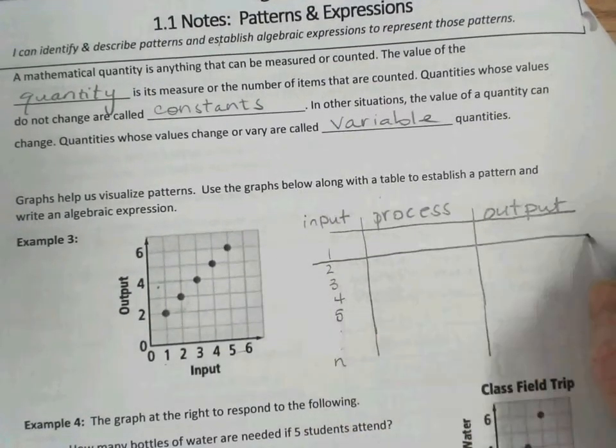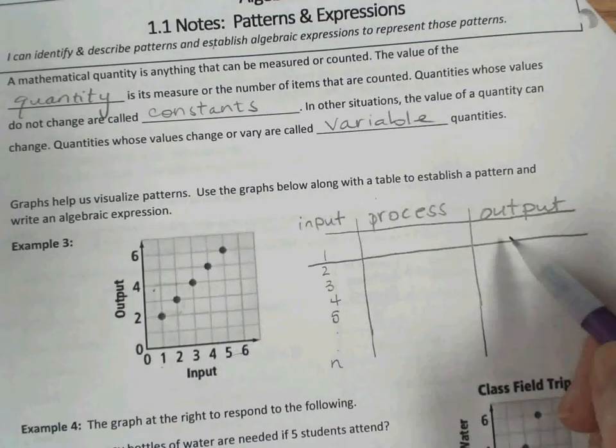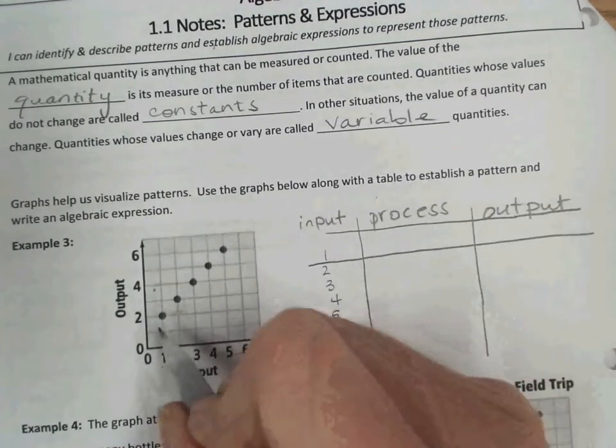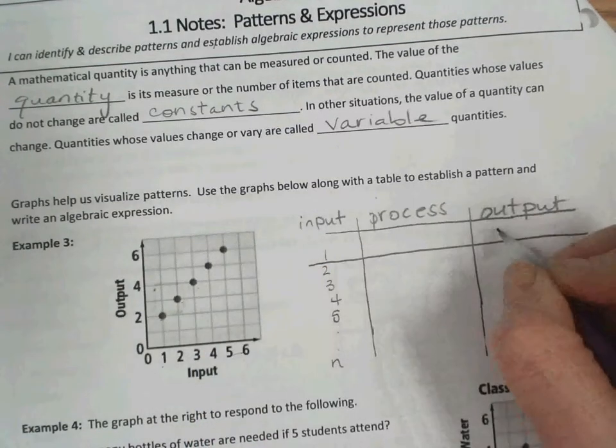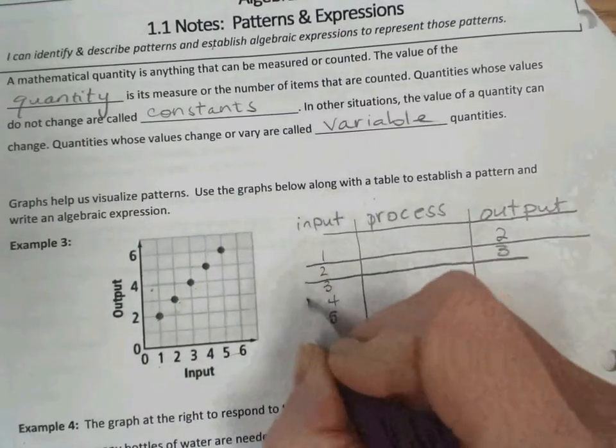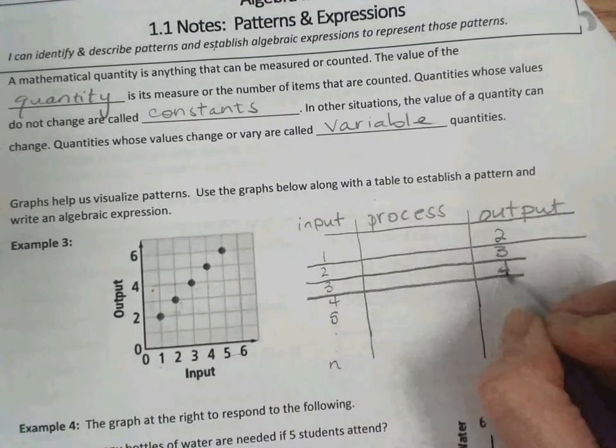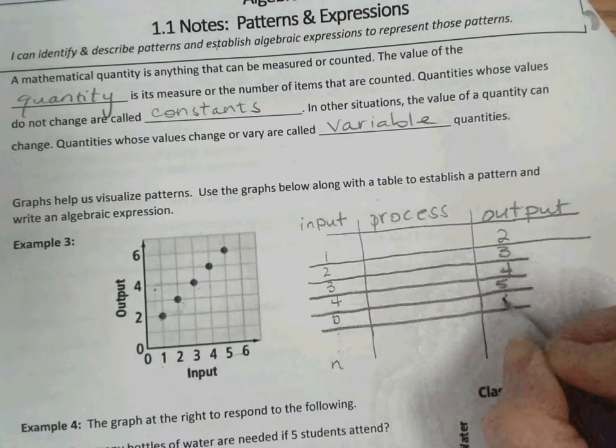And we want to establish a pattern for n, for any input. The process, then, let's see. First let's enter the outputs. So we have 2, 3, 4, 5, and 6 as our outputs associated with our inputs.